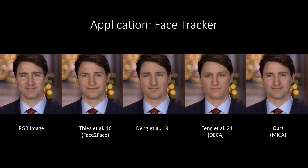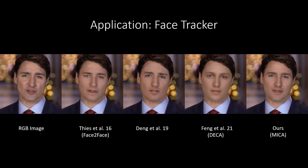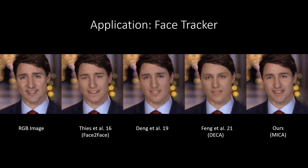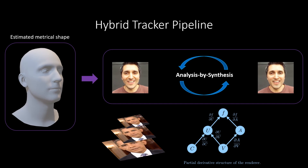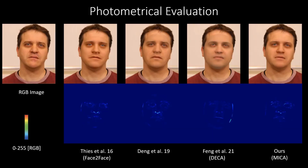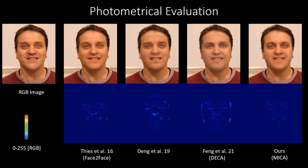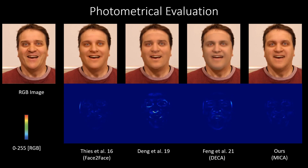We use our face shape estimator for a novel face tracking method. Specifically, we leverage the metrical estimation for an analysis-by-synthesis tracking approach. This tracking method uses differentiable rendering to optimize the per-frame expressions and rigid alignments of the face. We use a coarse-to-fine hierarchy with several internal optimization steps. Here we compare our method to single image-based methods of Fong et al. and Deng et al., as well as the video tracking of Tees et al.